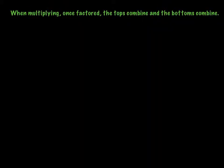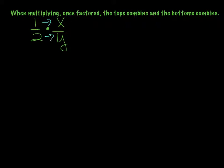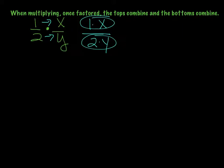Now we're going to do some problems multiplied together. When you're multiplying, like 1 half times x over y, you just multiply top times top and bottom times bottom — so it's 1 times x over 2 times y. The tops combine and the bottoms combine. Then, once you combine everything, you can cancel things out just like in the simplifying problems.